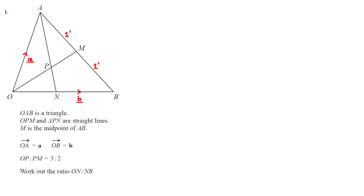Next we're given that the ratio OP to PM is 3 to 2, which we can also add to the diagram, where OP represents three parts and PM represents two parts. And we've been asked to work out the ratio ON to NB.